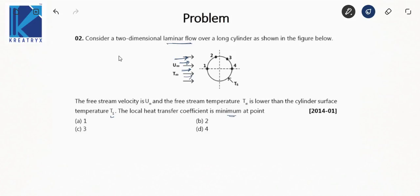The Nusselt number is influenced by the nature of boundary layer development on the surface. Starting at θ = 0, the Nusselt number decreases with increasing θ as a result of laminar boundary layer development. When the flow reaches the separation point at θ = 0.2, the Nusselt number is minimum. Therefore the local heat transfer coefficient will be minimum at θ = 0.2, so the answer is 2.